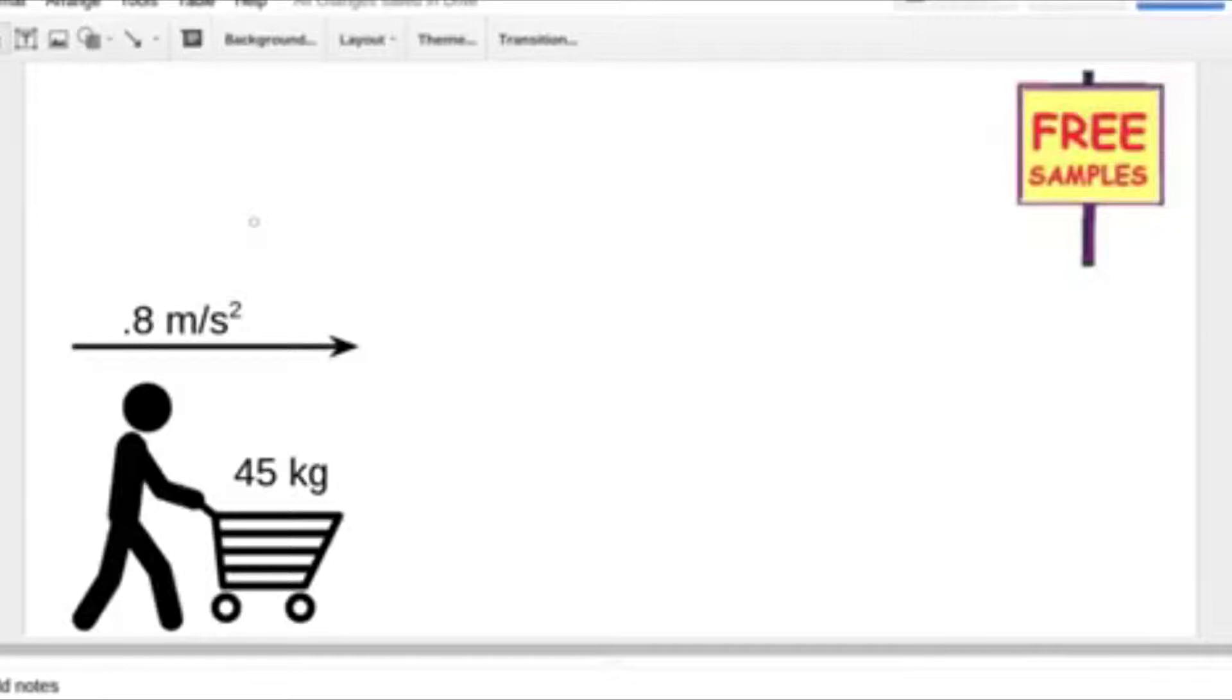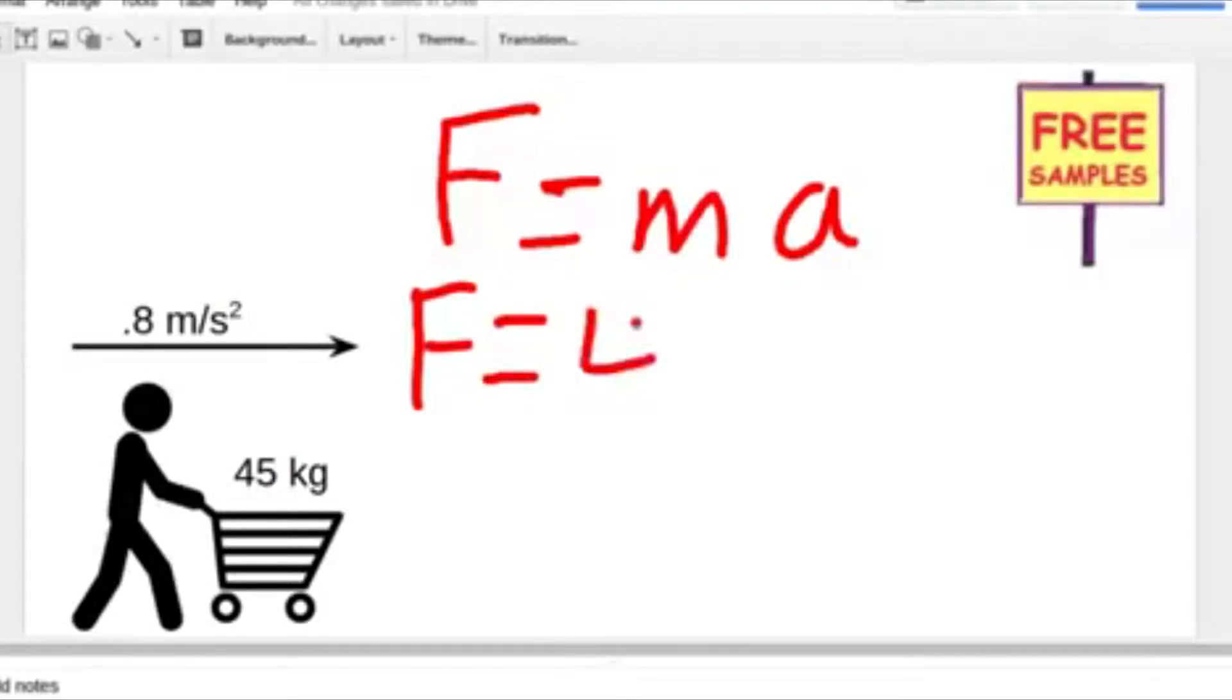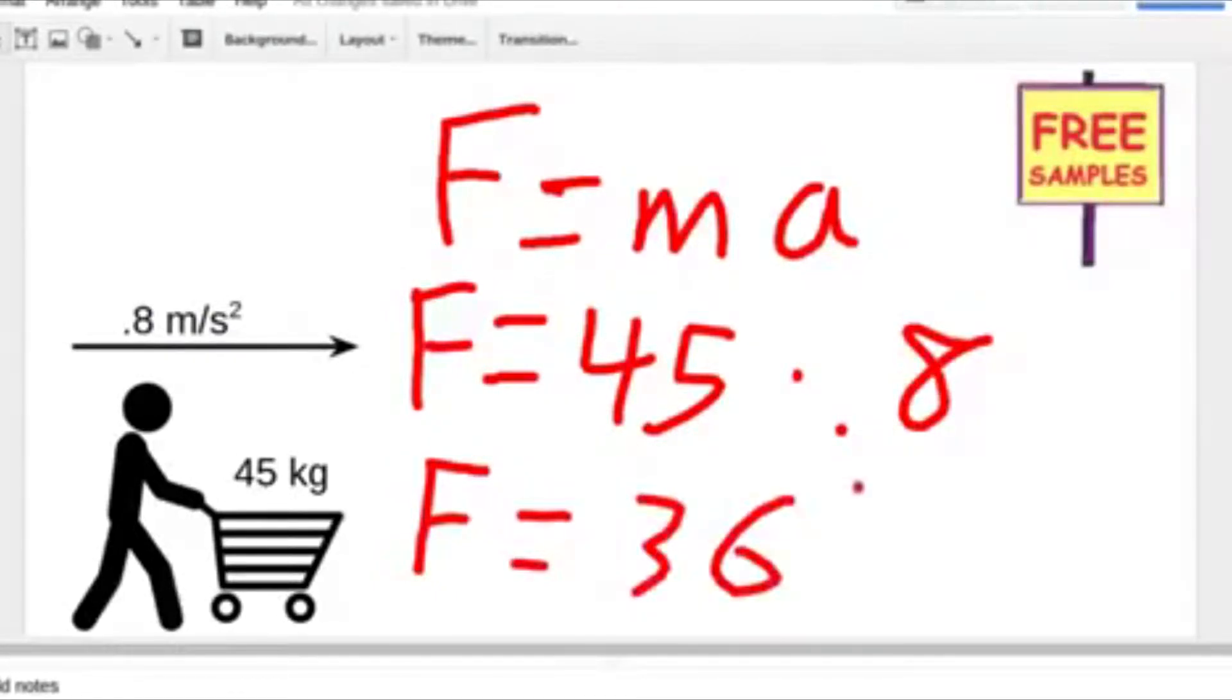We can solve this equation using Newton's second law, force equals mass times acceleration. Now if we plug in 45 kilograms for mass, and 0.8 meters per second squared for acceleration, we can solve to get the force applied to be 36 newtons.